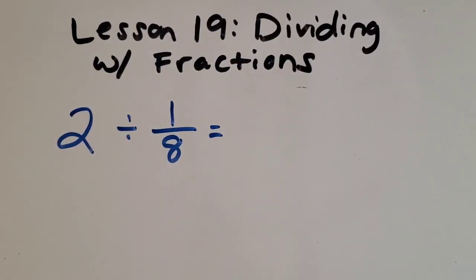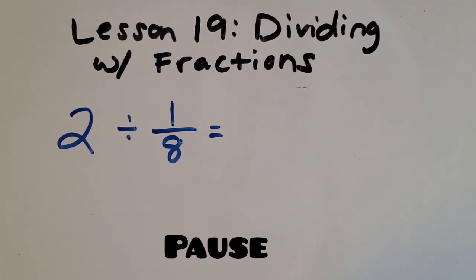For our last problem, I want to challenge you to pause the video and draw your own pizzas for 2 whole divided by one-eighth. Think about how many pizzas are you going to draw. You'll draw two, and then what are you going to cut them up into? Great, eighths, so eight slices per pizza. Have fun drawing your own pizzas, maybe add toppings that you like, kind of like I add pepperonis because that's what I like. Then cut them up and see if you can find the answer.